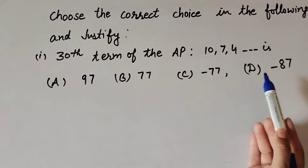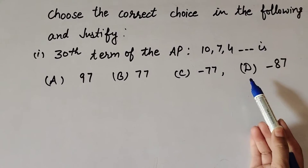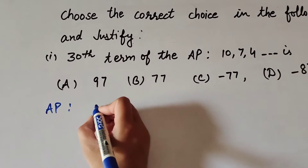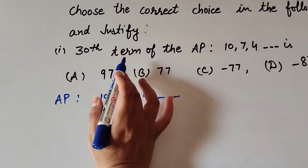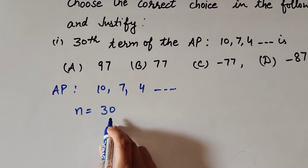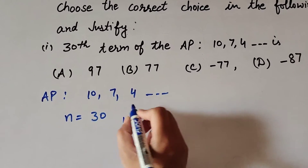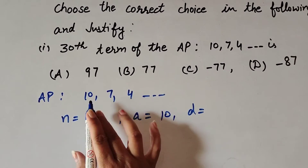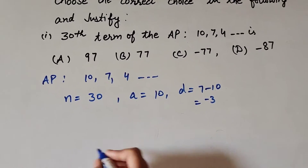We need to find the 30th term of the AP from these options. The given AP is 10, 7, 4, and so on. We find the 30th term, so n is equal to 30. The first term a is equal to 10. The common difference d equals the second term minus the first term: 7 minus 10, which equals minus 3.